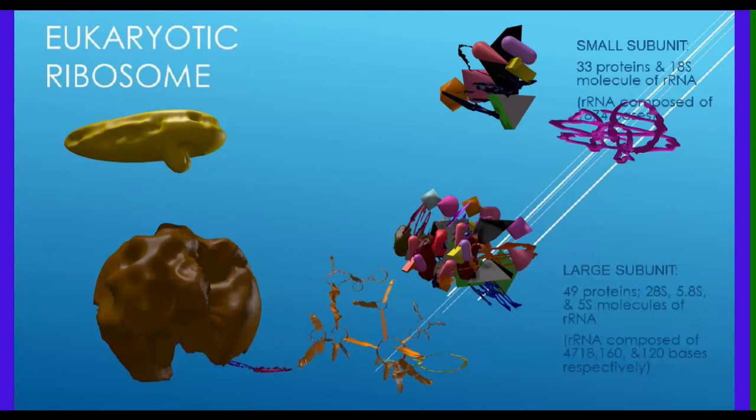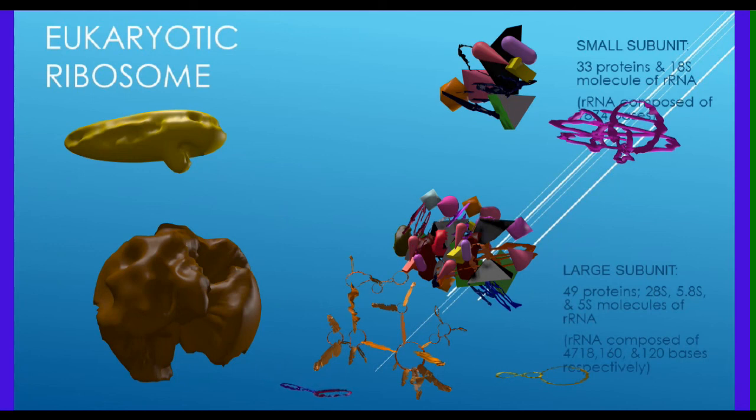The small subunit is composed of an 18S sized molecule of rRNA and 33 proteins.